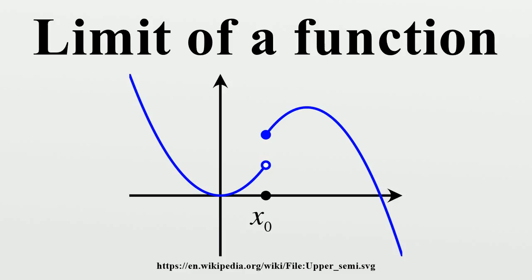Sequential limits: let f: X → Y be a mapping from a topological space X into a Hausdorff space Y, with p ∈ X and L ∈ Y. The sequential limit of f as x → p is L if, for every sequence in X minus {p} which converges to p, the sequence f converges to L. If L is the limit of f as x approaches p, then it is a sequential limit as well. However, the converse need not hold in general. If in addition X is metrizable, then L is the sequential limit of f as x approaches p if and only if it is the limit of f as x approaches p.